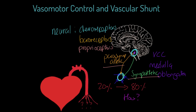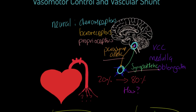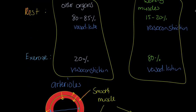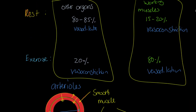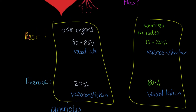Of course, it reverses the other way around when we stop exercising. That is the how of vascular shunt and vasomotor control. We get this redistribution of blood as a result of the vasoconstriction and vasodilation of pre-capillary sphincters and arterioles leading to the relative working muscles or areas of activity and inactivity.